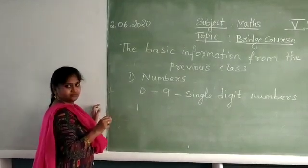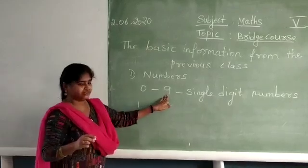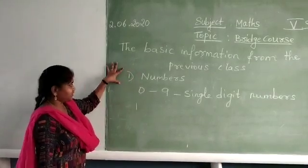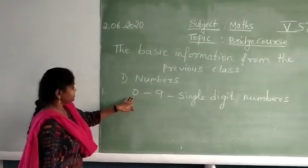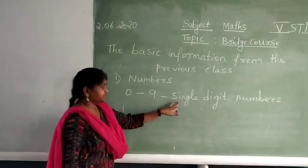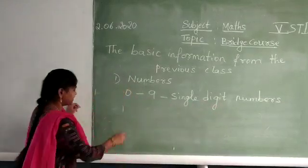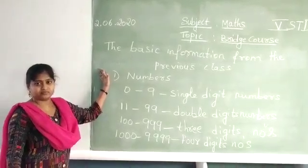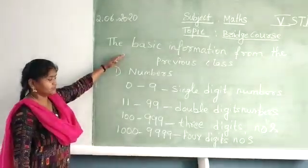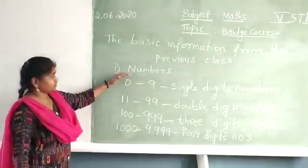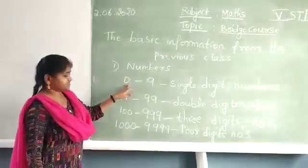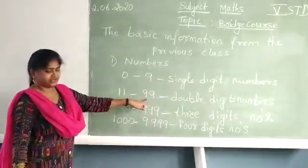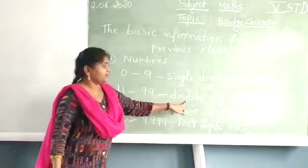So the first topic under Bridge Course, we are going to read about numbers. From 0 to 9, these are known as single digit numbers. From 11 to 99, these numbers are known as double digit numbers. So you can see the single digit starts from 0 to 9, and the second category is from 11 to 99.